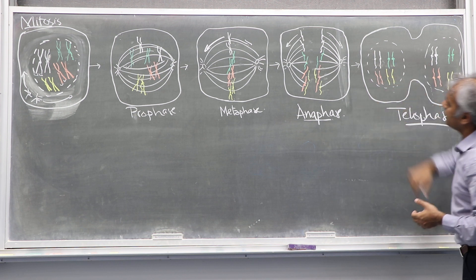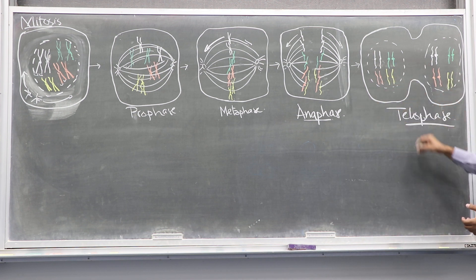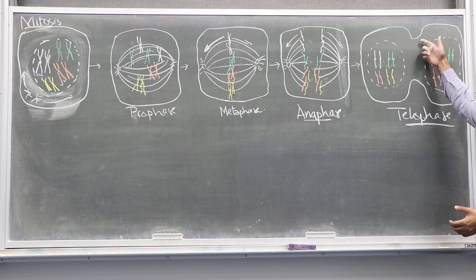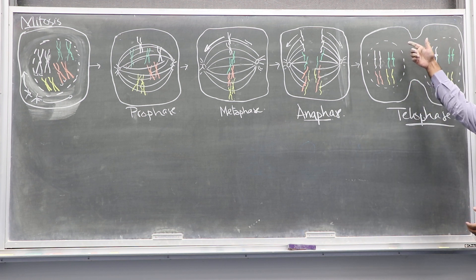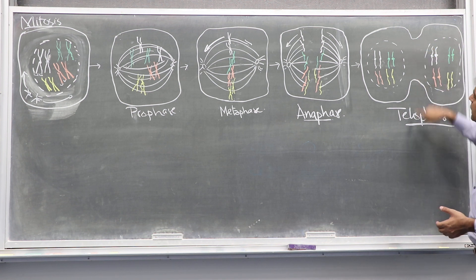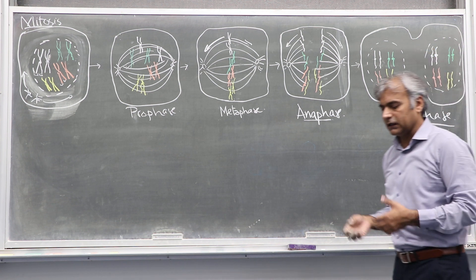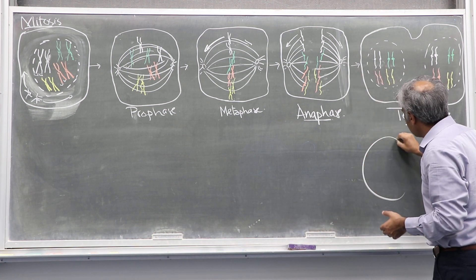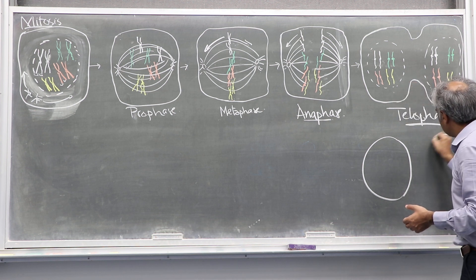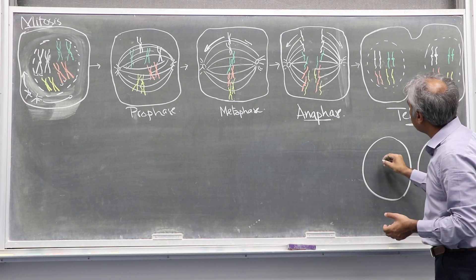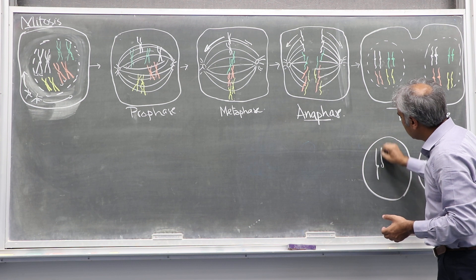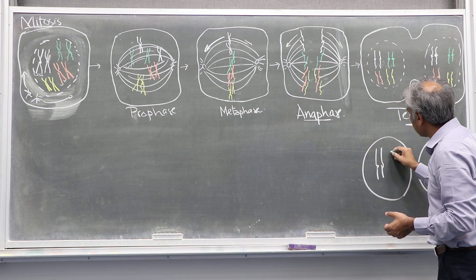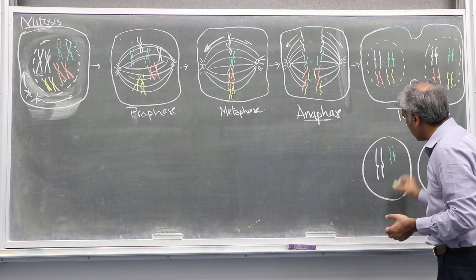The reappearance of the nuclear membrane — this phase is called telophase. Telophase correlates with the constriction of the cell membrane in animal cells, and this phase is called cytokinesis. Eventually, we have two cells which are exactly identical to the mother cell in terms of their chromosome number.